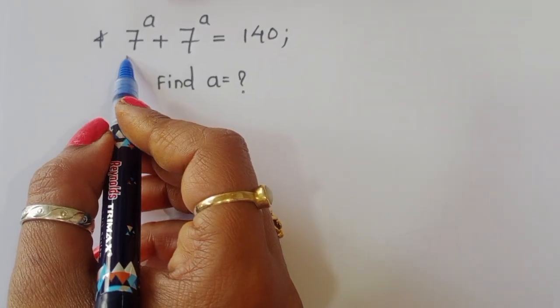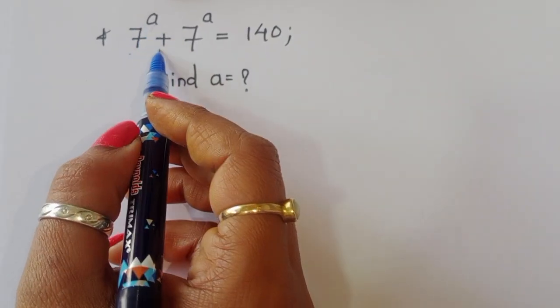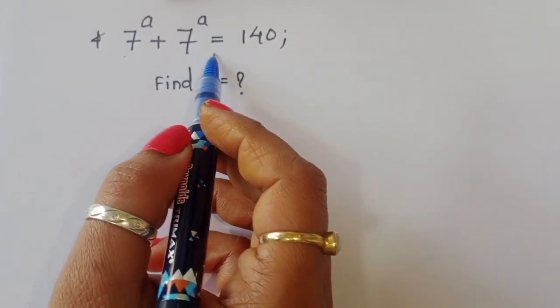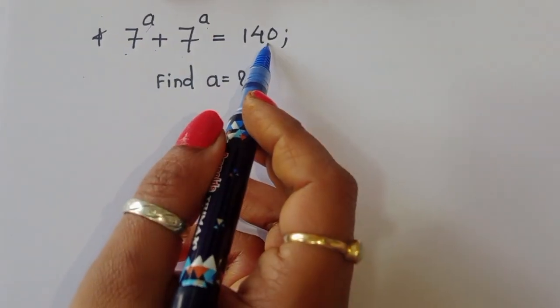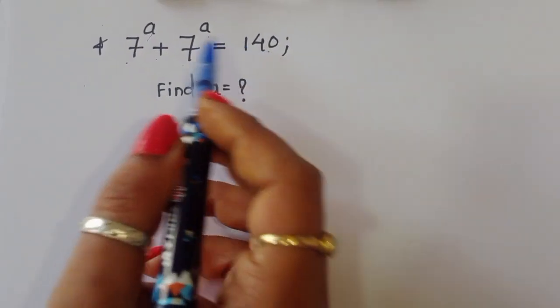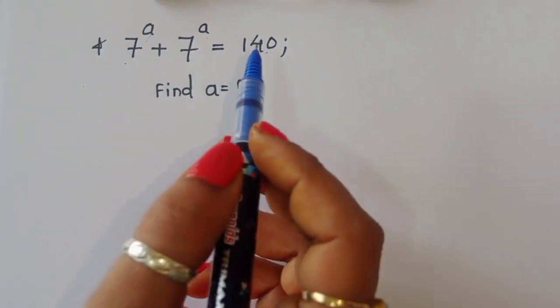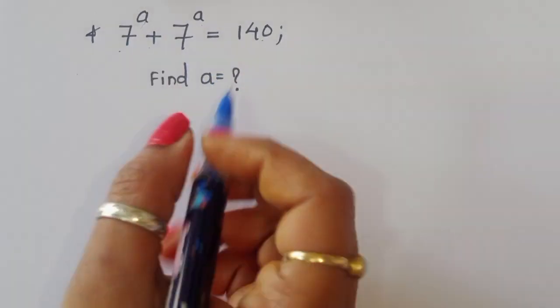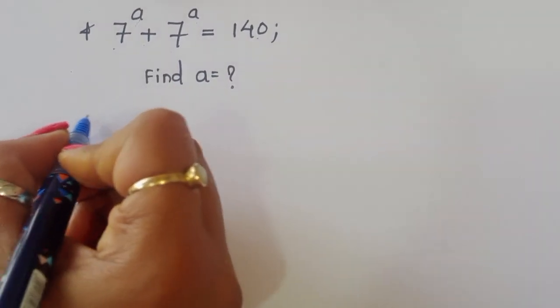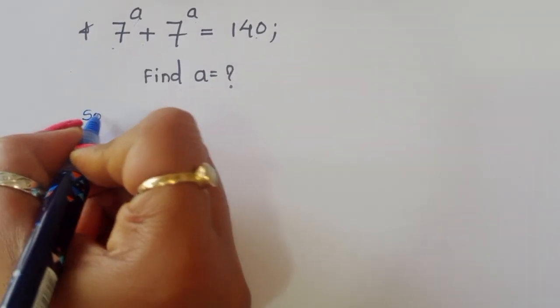The question is: given 7 power a plus 7 power a is equal to 140, we have to find out the value of a. Let's see the solution.